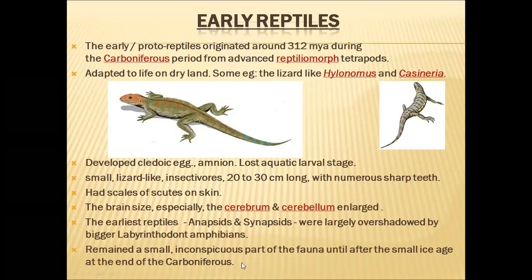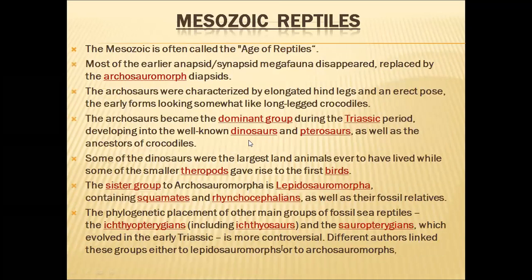After the Carboniferous period finished, the Mesozoic era started. In the Mesozoic era, these reptiles became the dominant animals on the planet — that is why the Mesozoic era is called the age of reptiles. Most of the earlier reptiles — anapsida, synapsida megafauna — disappeared, and they were replaced by archosauromorph diapsida-skull reptiles in this Mesozoic era.